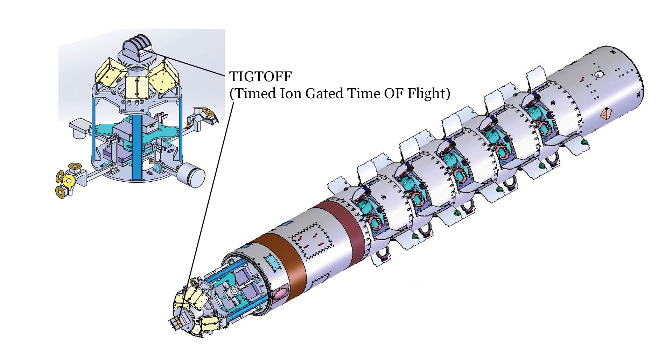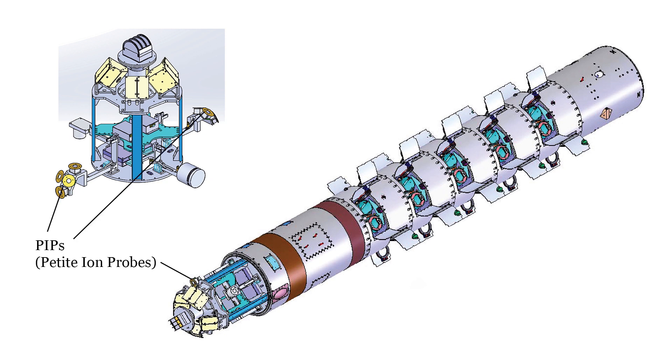TIGTOF will be used to measure the types of ions present up there, PIPs can measure the density and temperature of the ions, a magnetometer will measure field-aligned electric currents, and a set of pyrotechnic tracer cloud sub-payloads used to measure the strength and direction of neutral winds and plasma drift. More on those in a moment.